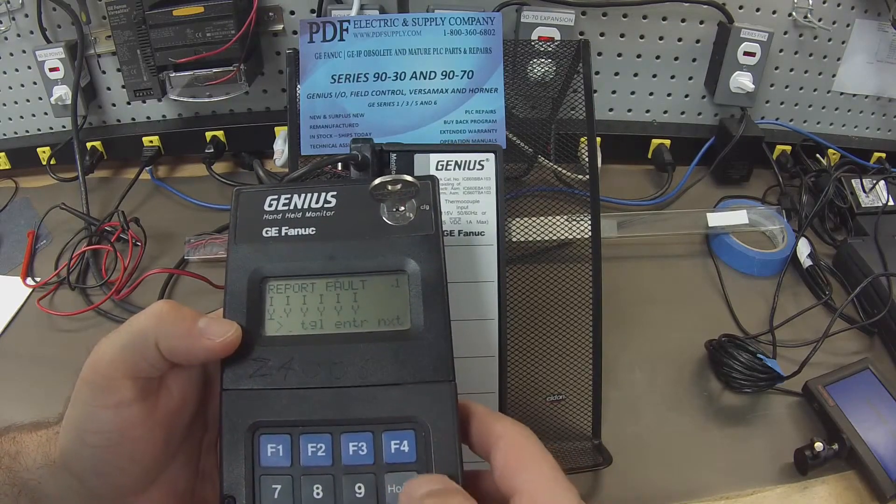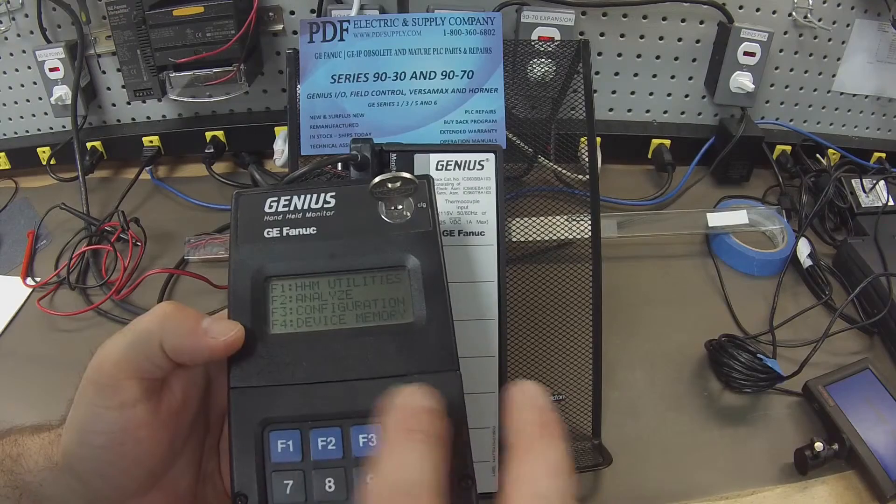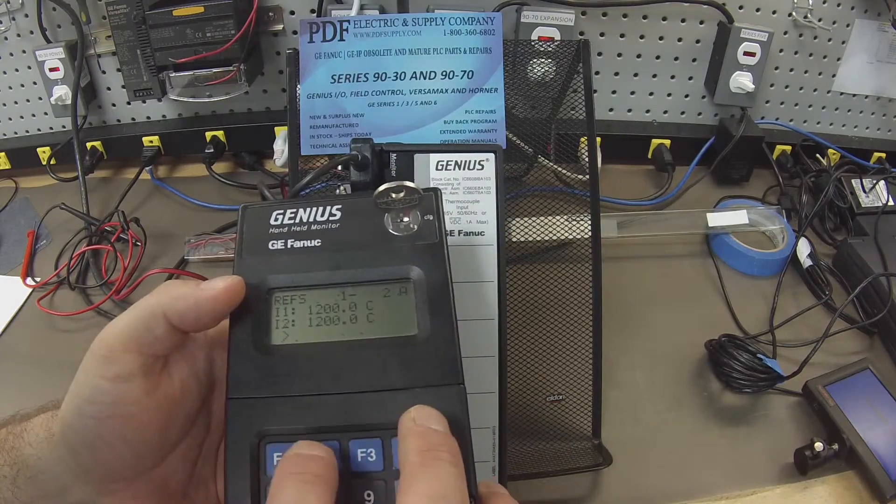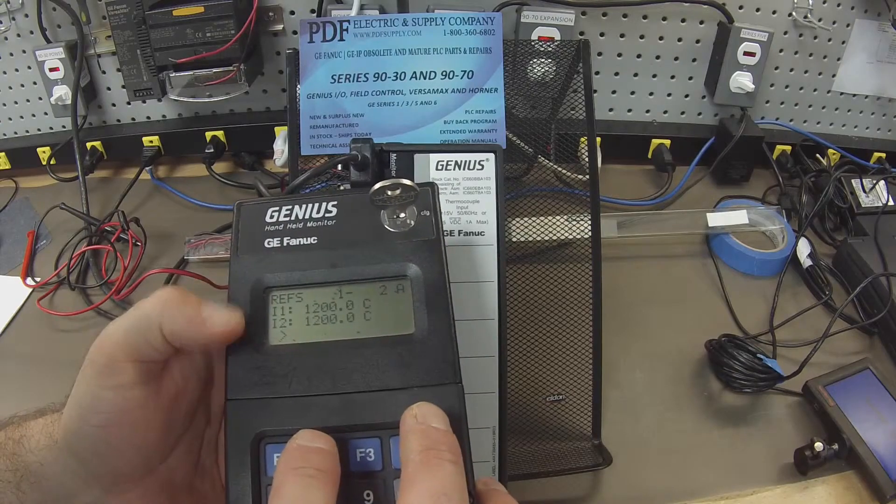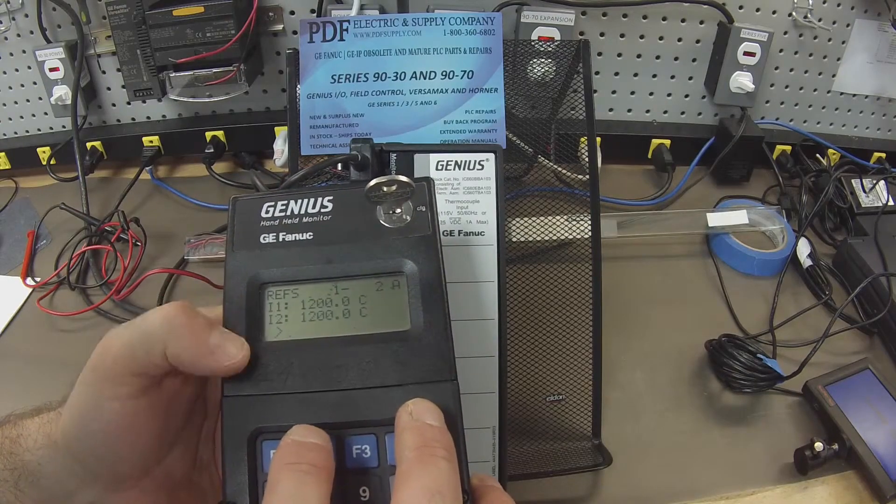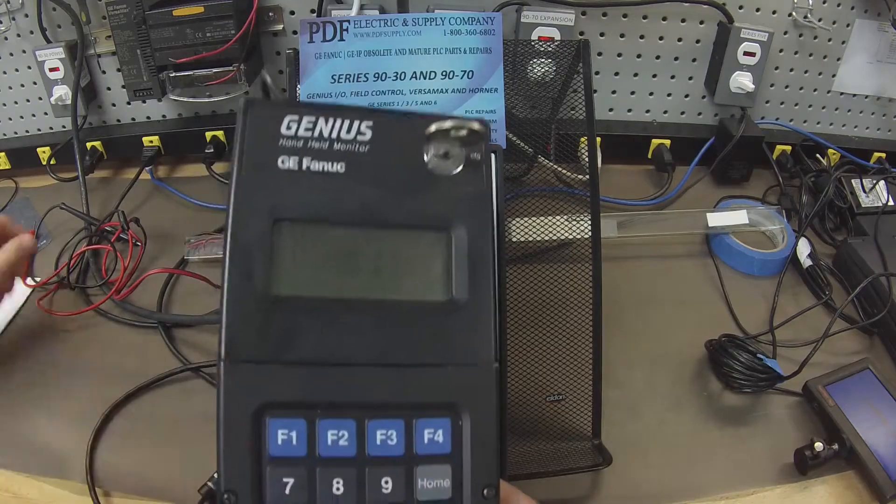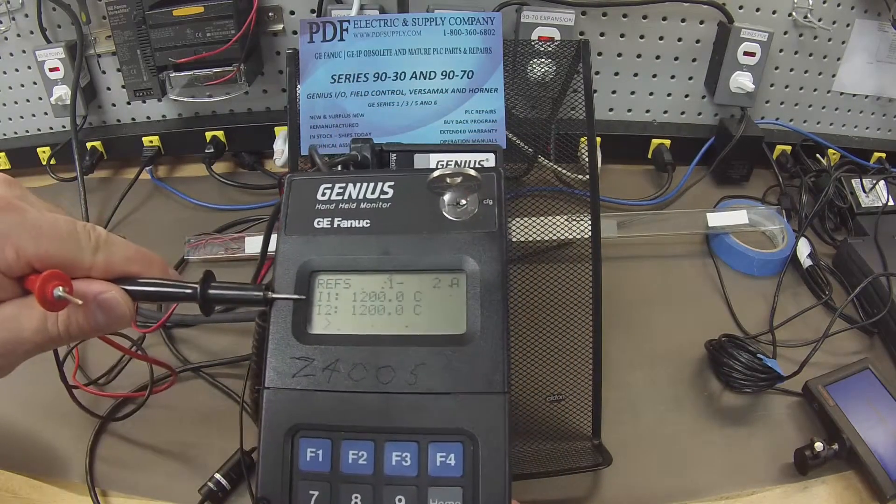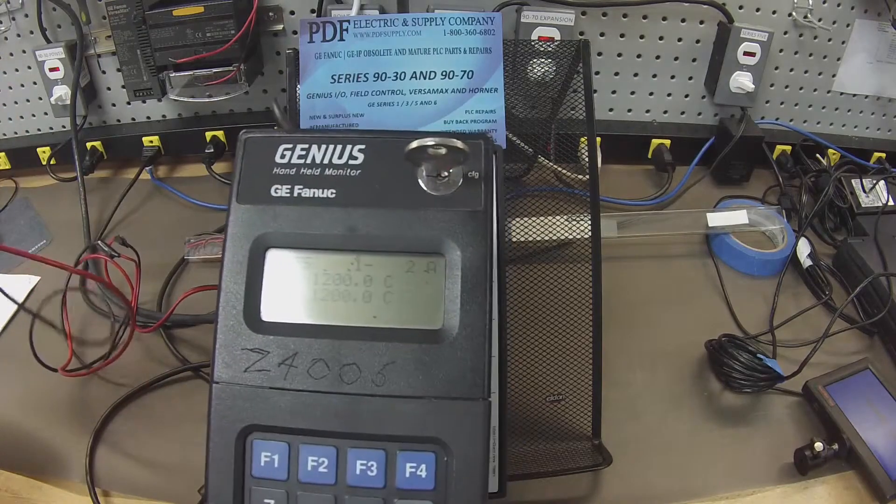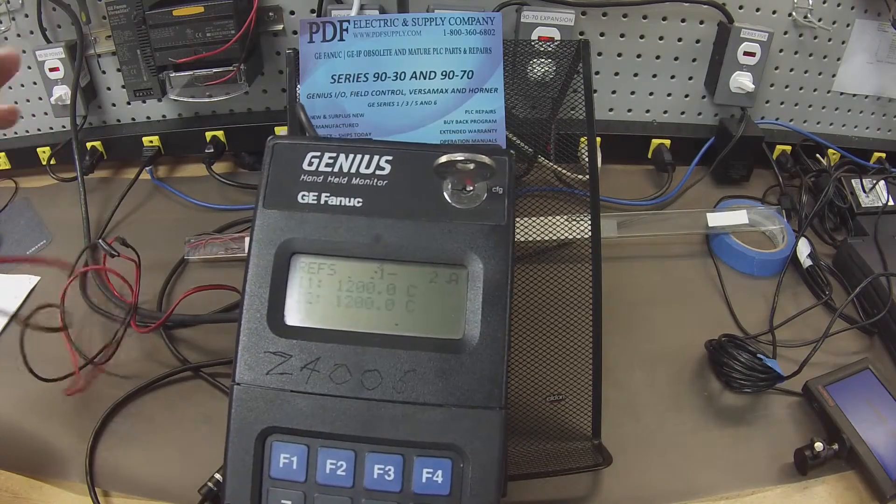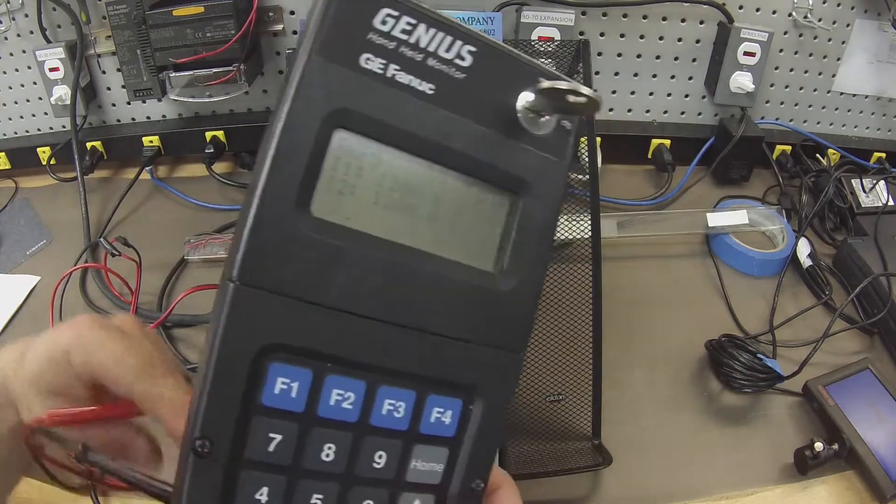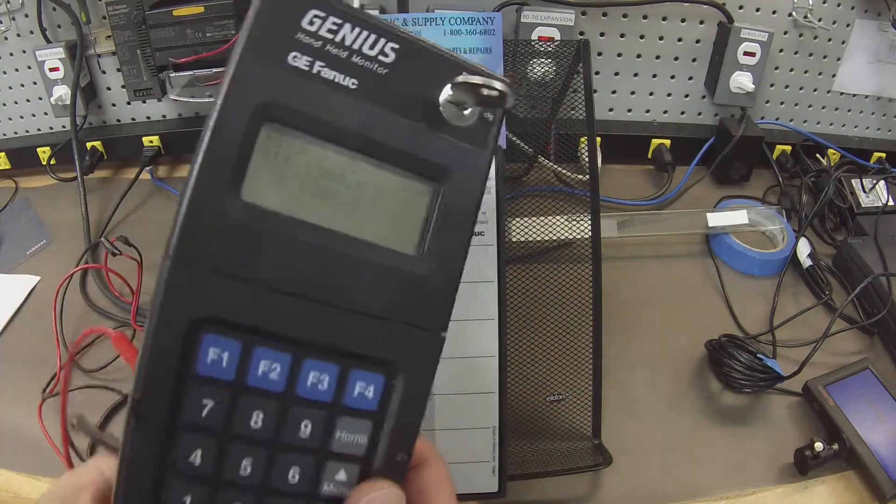Alright, I'm going to go back to home, and we want to analyze all six channels. F2, F1 to monitor block, and we can monitor two channels at a time, then we have to move on. So I'm going to touch the leads to the thermocouple so you can see the reading. Since all the channels are set to the same settings, all of my readings should be the same or very close.